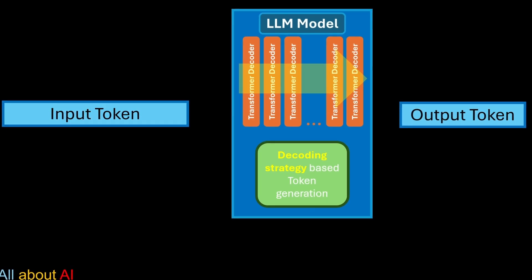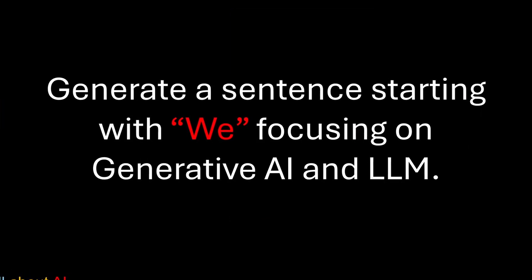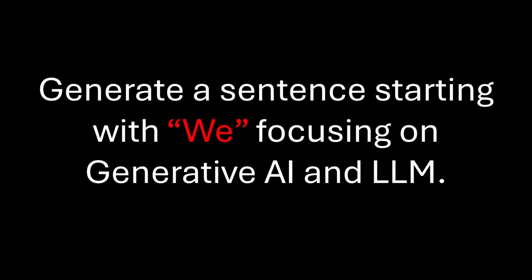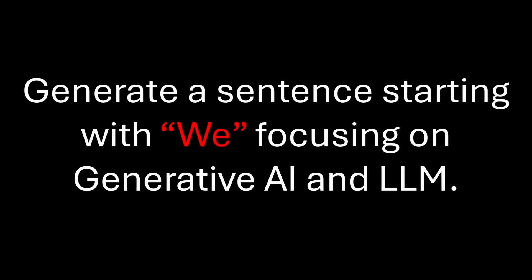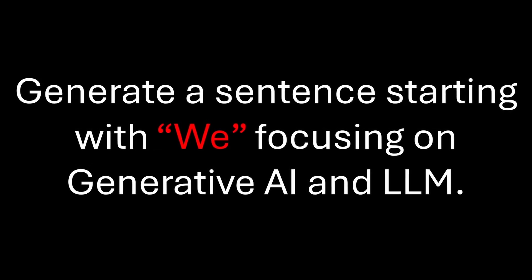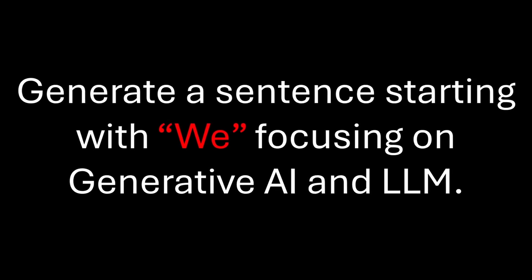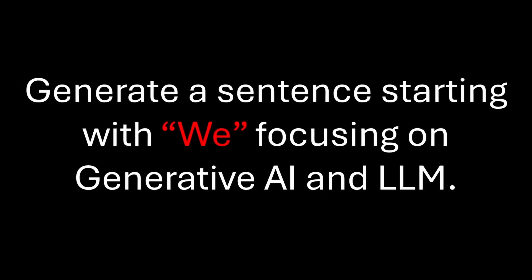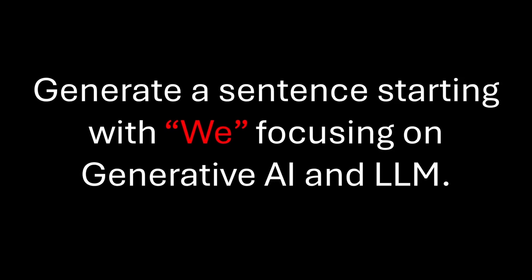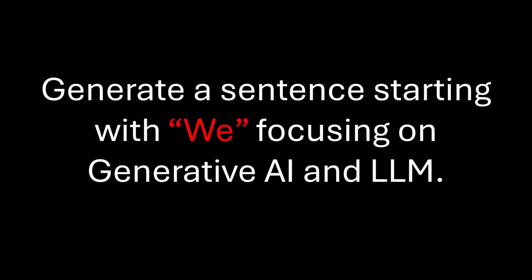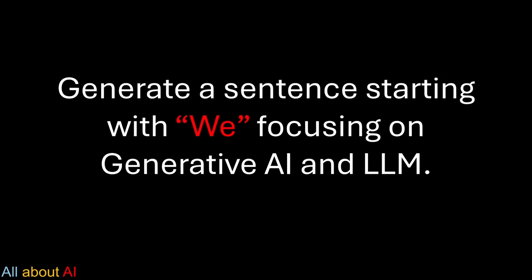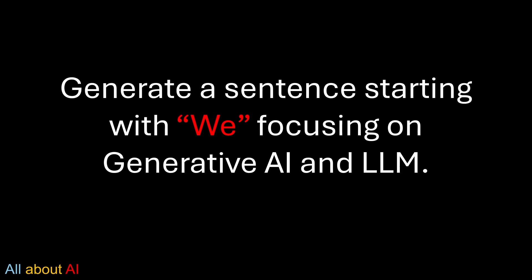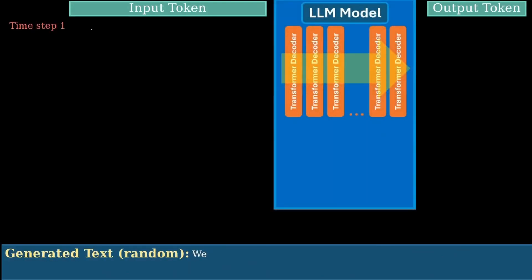To explain it further, suppose to the model, we give one prompt saying generate a sentence starting with we focusing on generative AI and LLM. Now let's take a look how this works. Here we are feeding this entire sentence as input and the token wise will start with first token as we, while model has already seen this entire sentence and it uses this entire sentence plus we as the input token at the first time step.